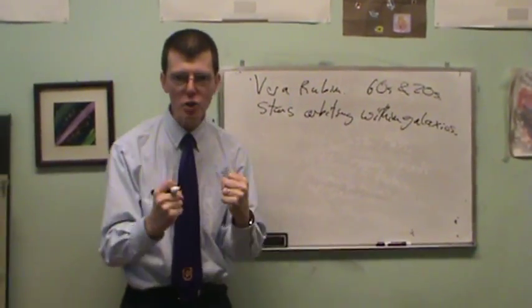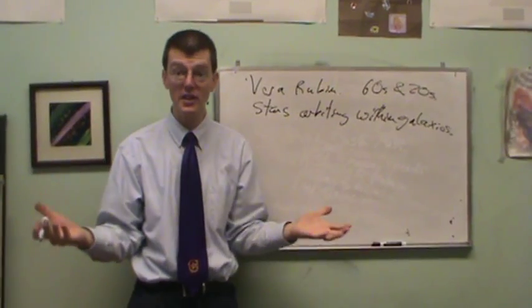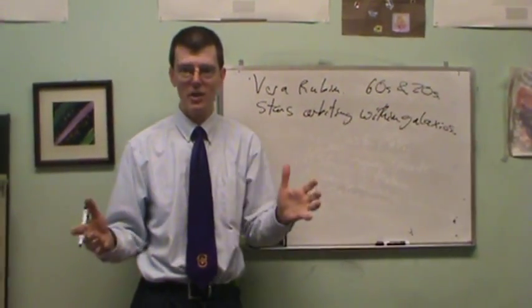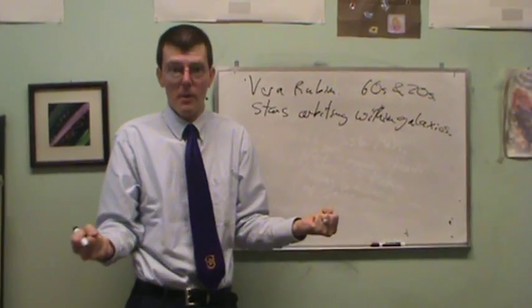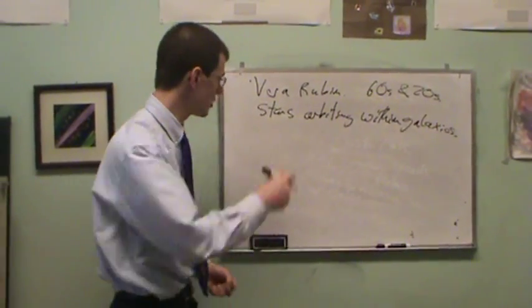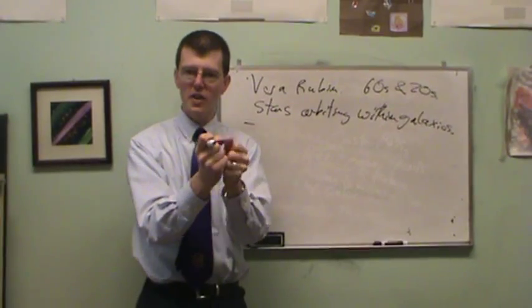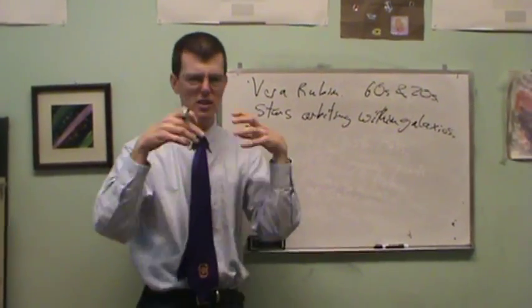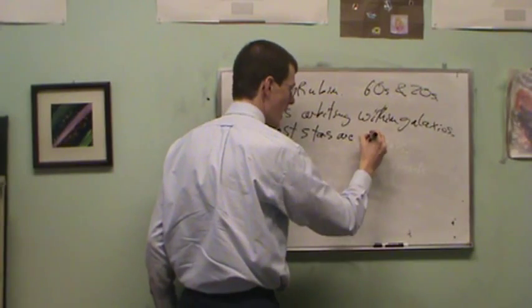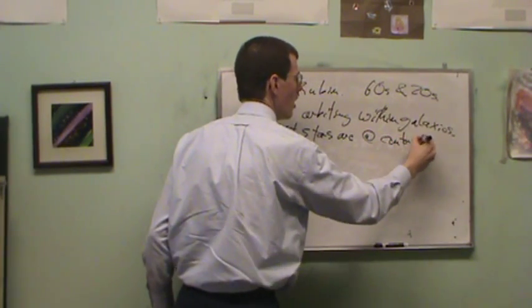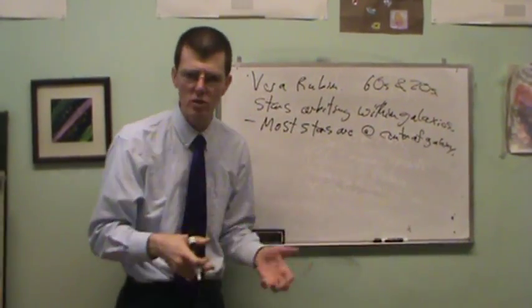There's nothing slapdash about this. It was just right down the numbers, it was so inarguable that it took the whole astronomical community and forced them to pay attention that there's something going on here. So stars orbiting within galaxies - here's the basic fact. In a galaxy, most of the stars are at the center. The central bulge of a galaxy, there's just tons and tons of stars there. Most stars are at the center of a galaxy. The vast majority of stars are in their central general bulgy sort of region.